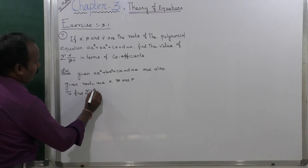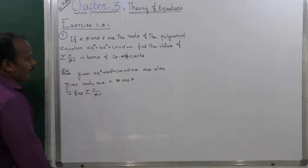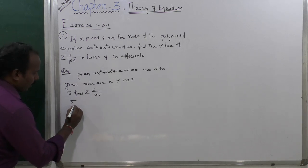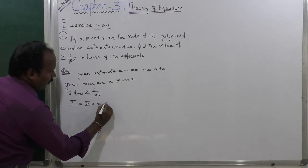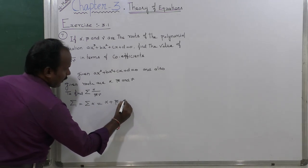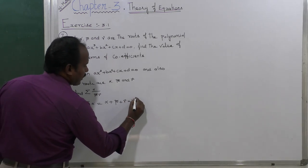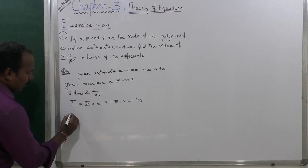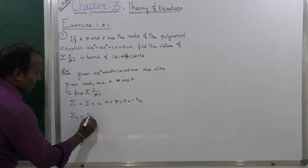To find: summation of alpha divided by beta gamma. First, find the value of Σ1, which is summation of alpha = alpha + beta + gamma = minus b by a. That is the formula.